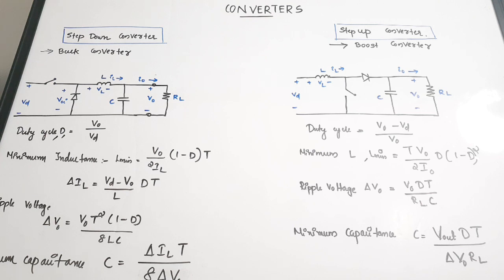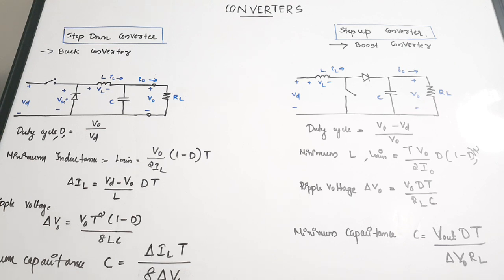First we will discuss the step-down converter, which is the buck converter — a converter that reduces the voltage. The buck converter can produce an output voltage approximately 80% below the input voltage. The input and output will both be DC, but there will be a reduction in voltage level of approximately 80%. Looking at the circuit diagram, there is Vd as the input voltage and a diode connected in parallel with the source voltage.